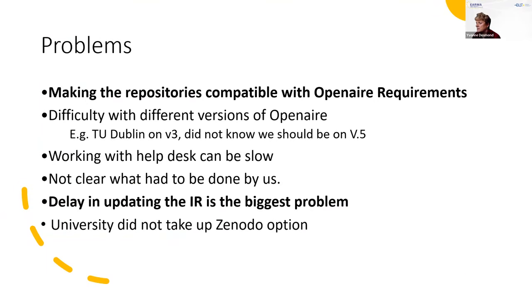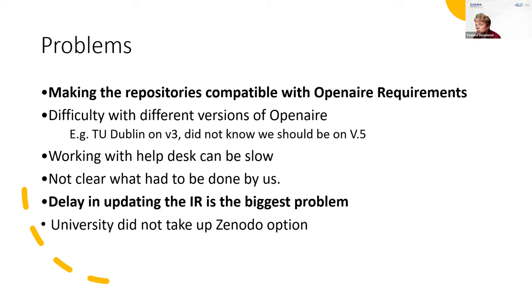There were problems. Making the repositories compatible with OpenAIRE requirements took a lot of work. We had difficulty with different versions — we had been harvested by OpenAIRE for years, but we discovered we were on version three and didn't know there was a version five. Working with the help desk can be slow and requires a little patience. In the initial stage, we weren't clear what had to be done by us, but that became apparent over time. The biggest problem is the delay in updating the IR — currently 12 weeks, which is far too long. And the big disappointment was that one university did not take up the Zenodo option as they didn't have the resources.